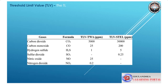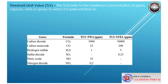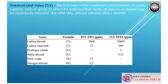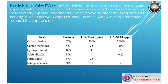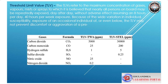Threshold limit value (TLV): TLVs refer to the maximum concentration of gases, vapors, mists or sprays to which it is believed that nearly all persons on board may be repeatedly exposed, day after day, without adverse effect, assuming an 8-hours-per-day, 40-hours-per-week exposure. Because of the wide variation in individual susceptibility, exposure of an occasional individual at, or even below, the TLV may not prevent discomfort or aggravation of a pre-existing condition.